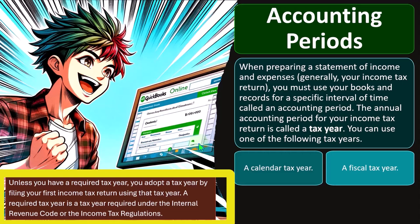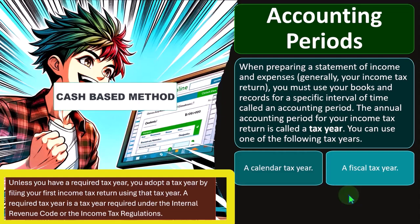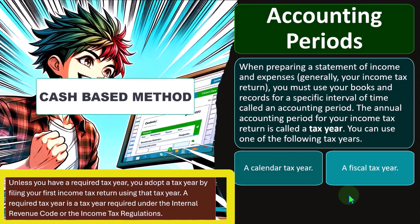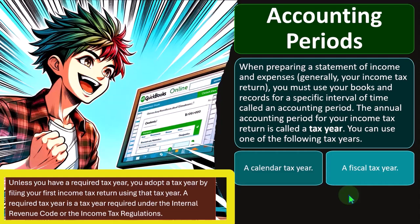So the tax code is going to be set up like a good accounting system, which would say we need consistency — the accounting period has to be the same. That doesn't mean you can't change it under any circumstances, but it will be more difficult to change after the first year. The same goes for the method you're going to use. If you choose a cash-based method, then that's the method the IRS is going to want you to stick with, given the consistency principle.